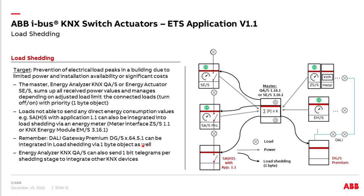Let's look at load shedding in detail. Before we come to the changes, a small update on what load shedding is. Practically it's a prevention of electrical load peaks in a building due to limited power, installation availability, or significant costs if you overshoot a certain power level. The target is to turn off loads with different priorities in order not to exceed a certain power level. A so-called master provides the intelligence in this logic.